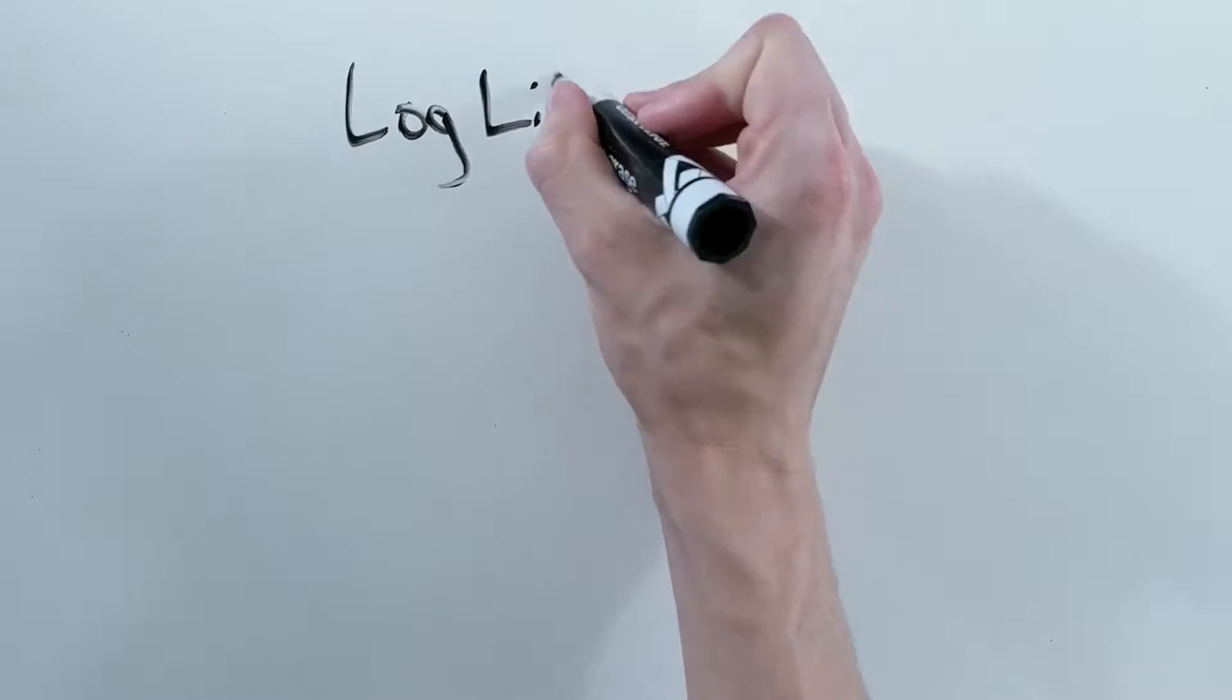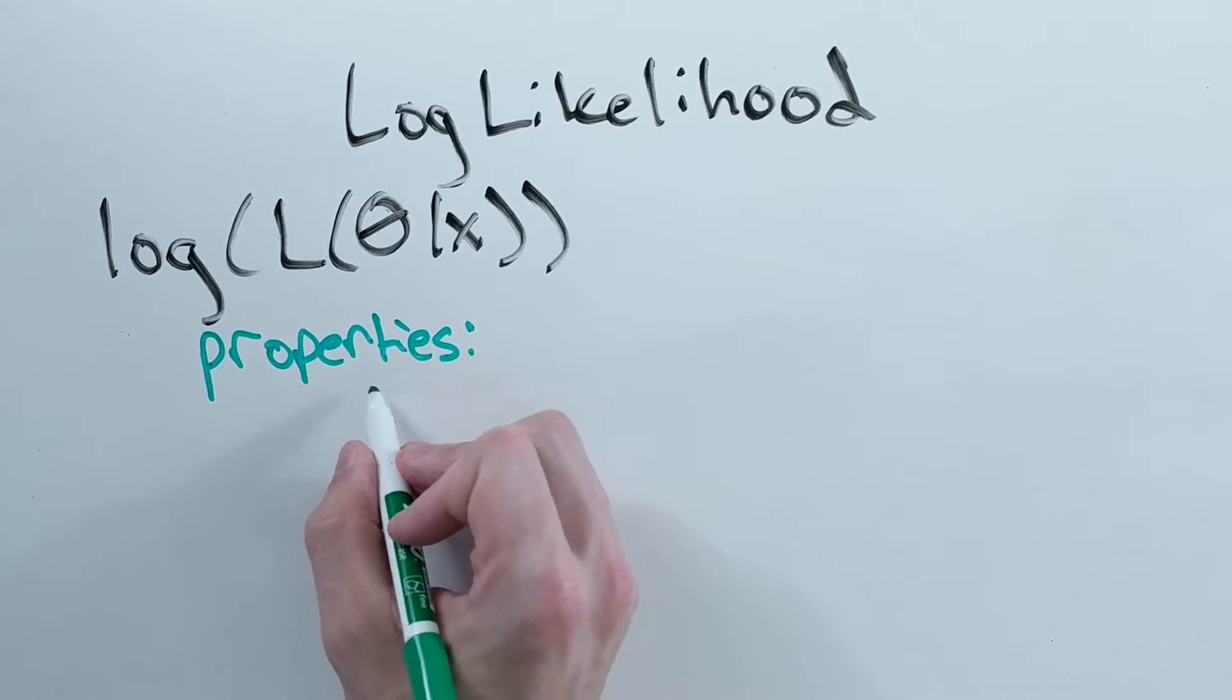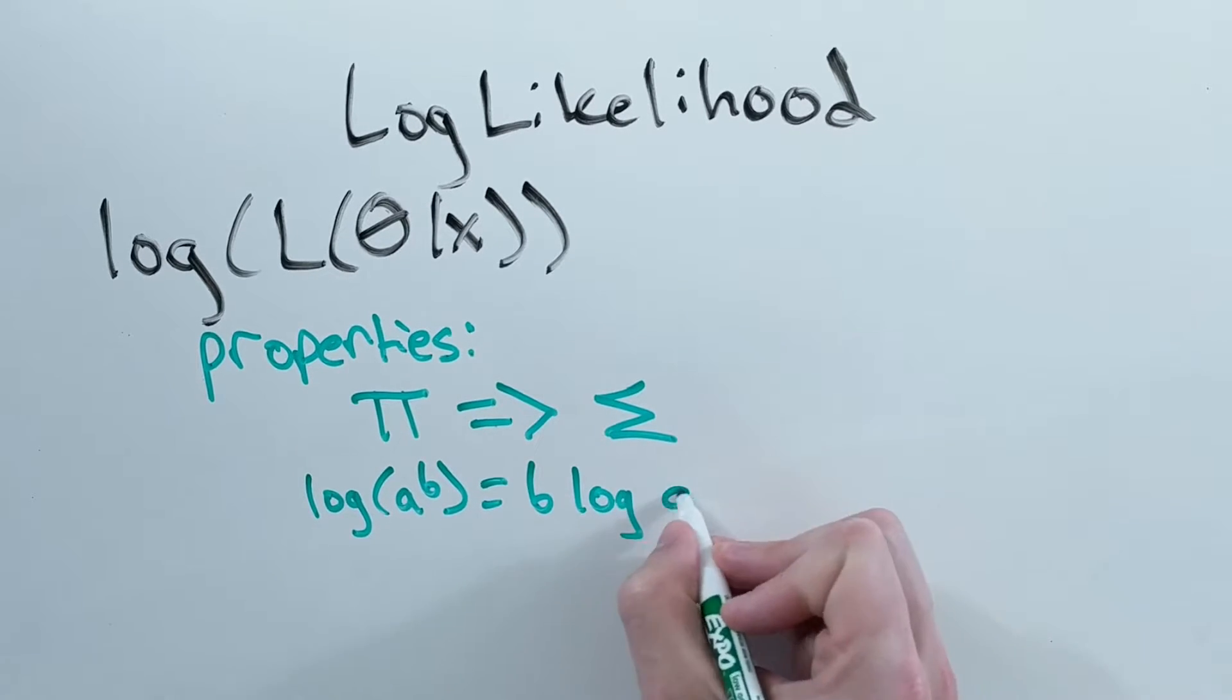Log likelihood is just the log of the likelihood. We use the log so that our function has two nice properties. Products turn into sums, and exponents turn into products.